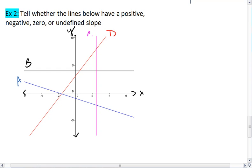For example 2, I want you to look at the diagram that's given and tell me whether the lines below have a positive, negative, zero, or undefined slope.